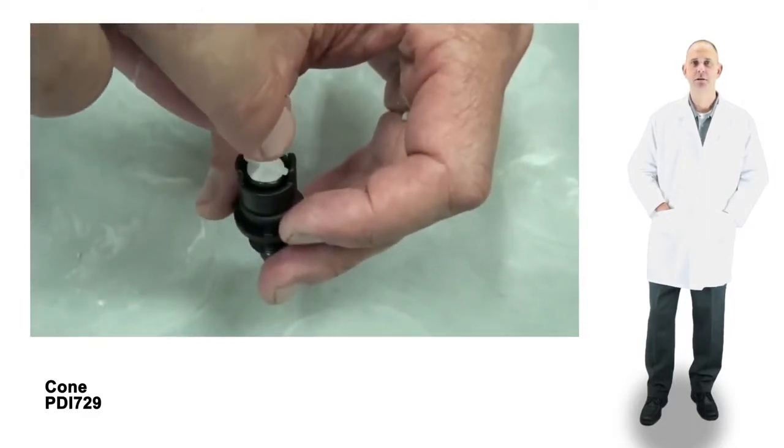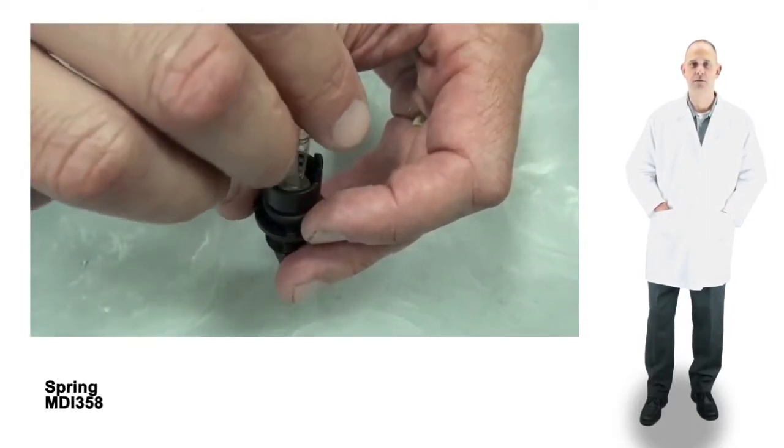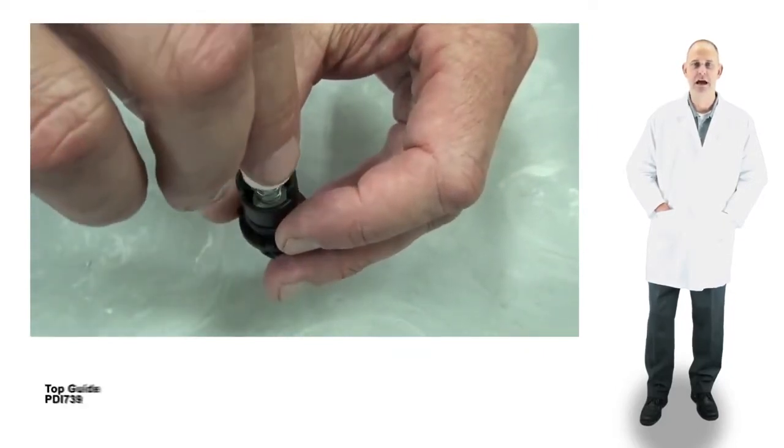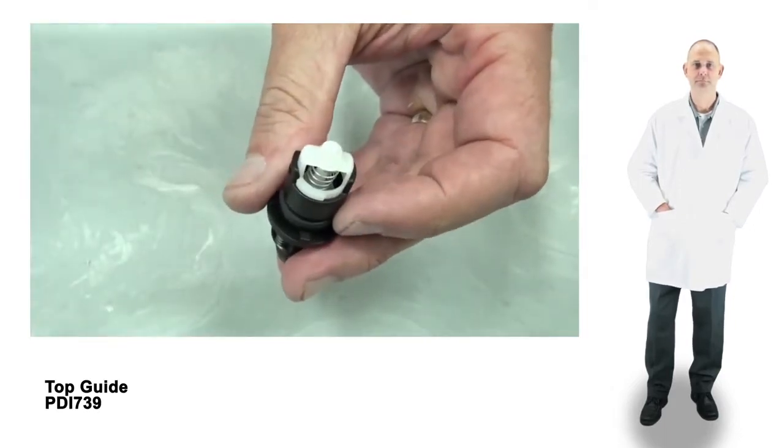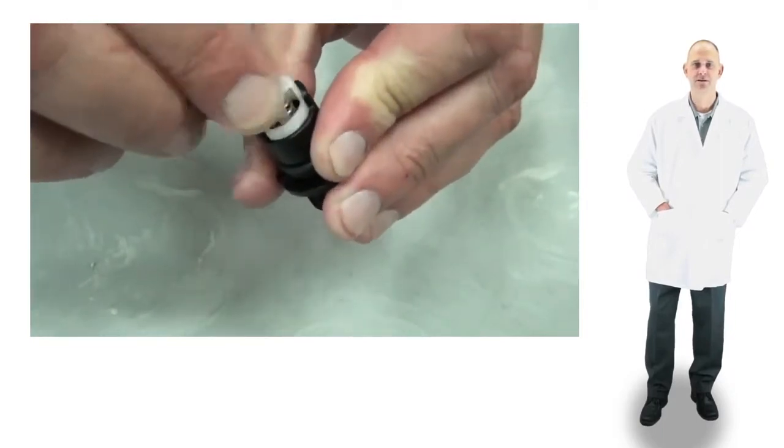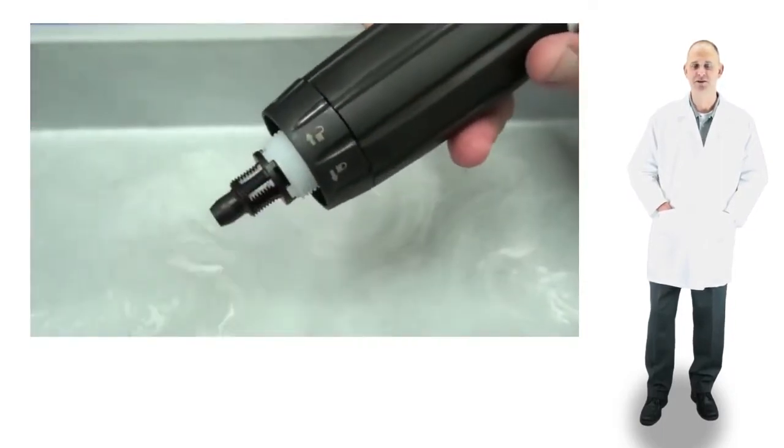To reassemble, put the cone into the top of the barb. Next, slide the spring over the shaft and position the top guide over the shaft. Align the guide and twist it a quarter turn clockwise to lock. Give it a tug to make sure everything is in position. Reinstall the check valve assembly into the stem. Then, reinstall the check valve nut.